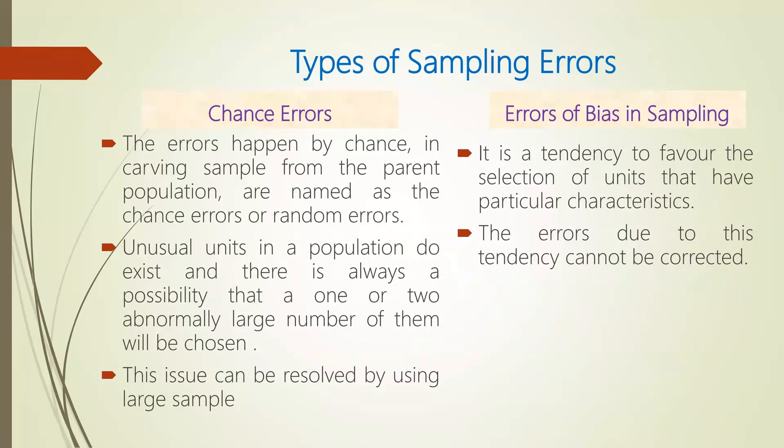There are two types of sampling errors: chance errors and errors of bias. Chance error happens by chance when you are drawing a sample from a parent population — it is a random error, not done purposefully. Unusual units which are present in populations contribute to this type of error. You can solve this by increasing the size of the sample and the chance error can get reduced. The errors of bias in sampling, however, are very difficult to solve — they will never get corrected.